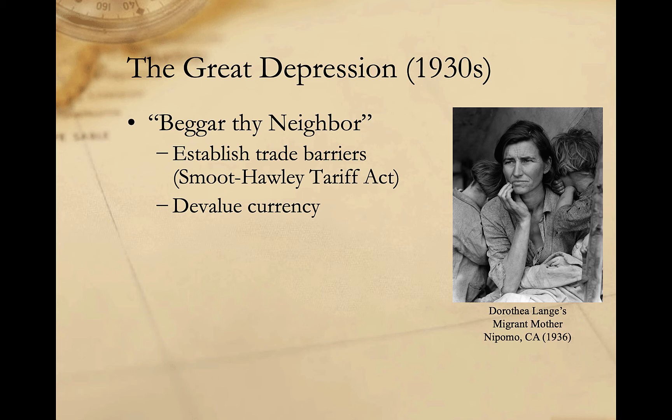Collectively, these policies came to be referred to as beggar-thy-neighbor policies — essentially attempting to protect the US economy by exporting American economic decline to the rest of the world. But other countries were suffering similar economic problems and pursuing similar policies. As a result, the policies were totally ineffective and merely served to exacerbate the crisis. The US and the rest of the world continued to sink further into economic depression.